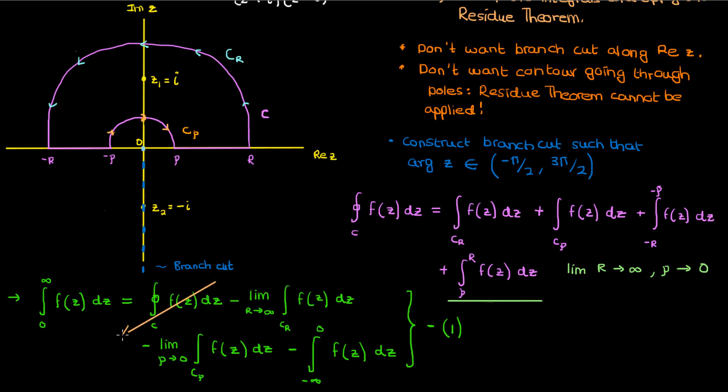Now according to the residue theorem we can write this closed contour integral over C as 2 pi i times the sum of the residues of the poles of f contained within the contour C. But the only pole that's actually contained in C is the pole at z equals i, so we just have to find the residue of f of z at z equals i.